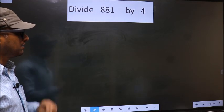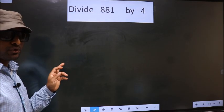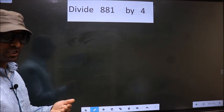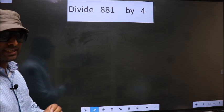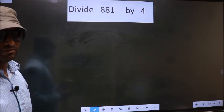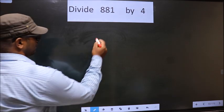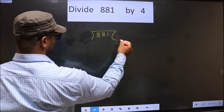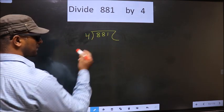Divide 881 by 4. While doing this division, many do this mistake. What is the mistake that they do? I will let you know. But before that, we should frame it in this way. That is 881, 4 here.